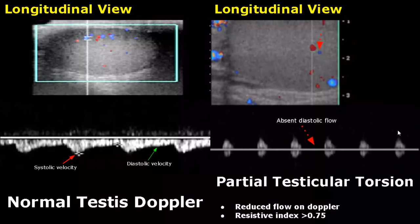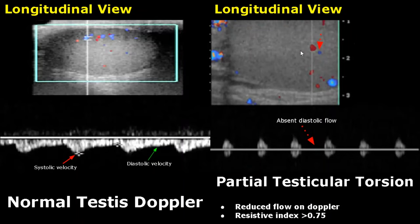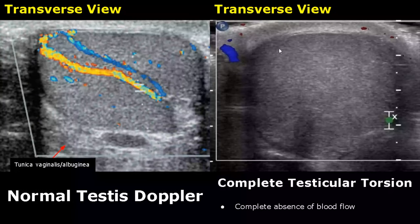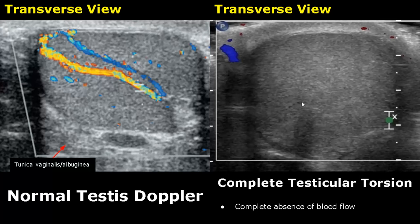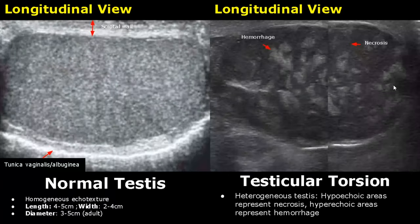In partial testicular torsion there will be reduced blood flow within the testis, examined with spectral Doppler. The normal spectral waveform shows normal systolic and diastolic flow, whereas in partial torsion there is absent diastolic flow and the resistive index will be greater than 0.75. In complete testicular torsion, color Doppler shows complete absence of blood flow within the testis. A late finding of testicular torsion shows the testis appearing heterogeneous — the hypoechoic areas represent necrosis and the hyperechoic areas represent hemorrhage.